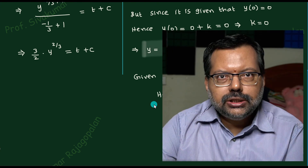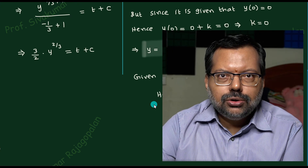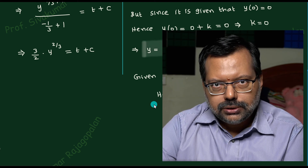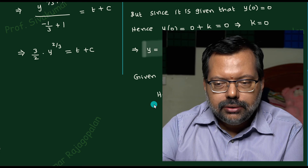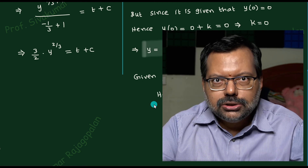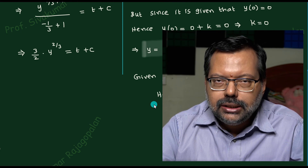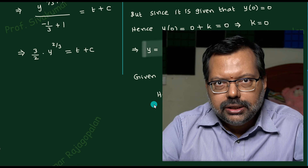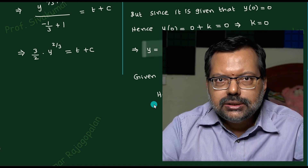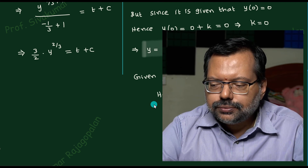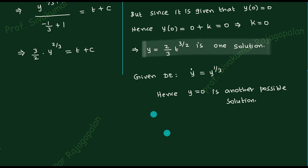The key point is that directly from the theorem you make the conclusion — not by actually solving the differential equation. Here we executed the actual solution only to demonstrate that what the theorem predicted can be seen directly from the solution. For complicated equations where a direct solution may not be possible, we can only talk about existence and uniqueness using the theorem.